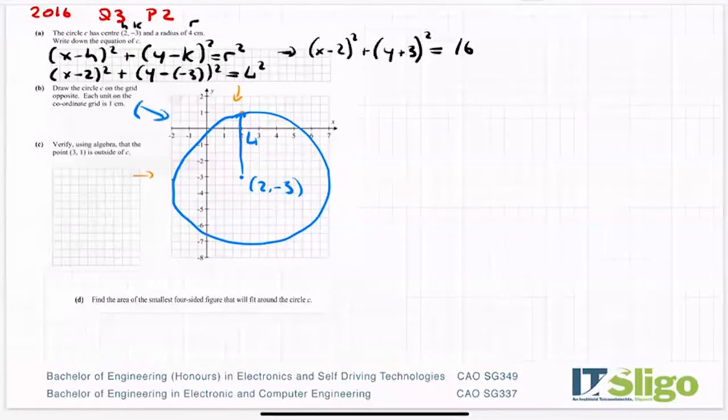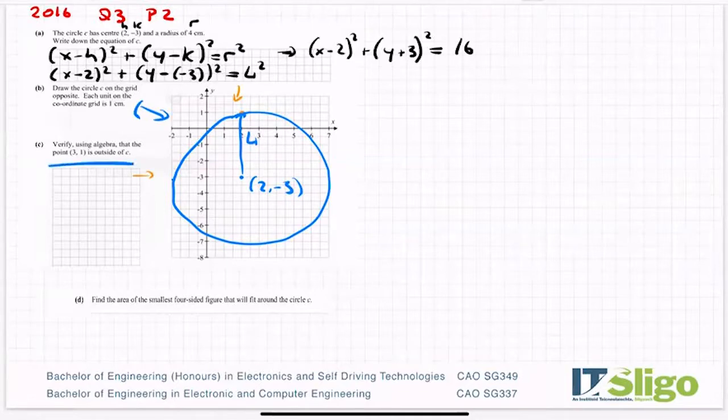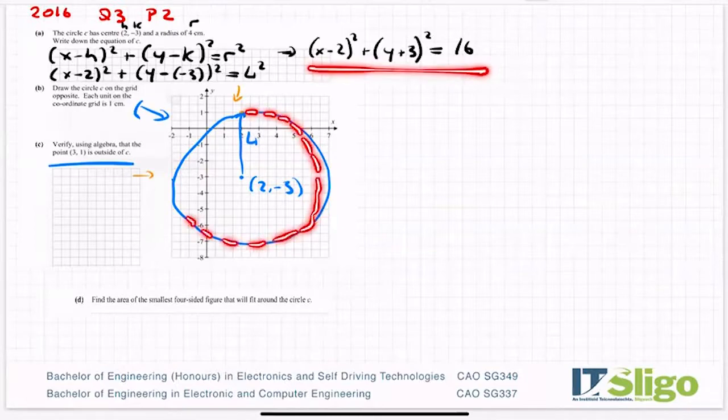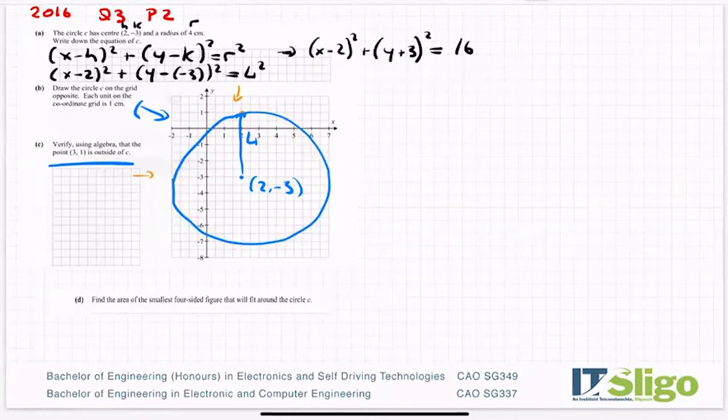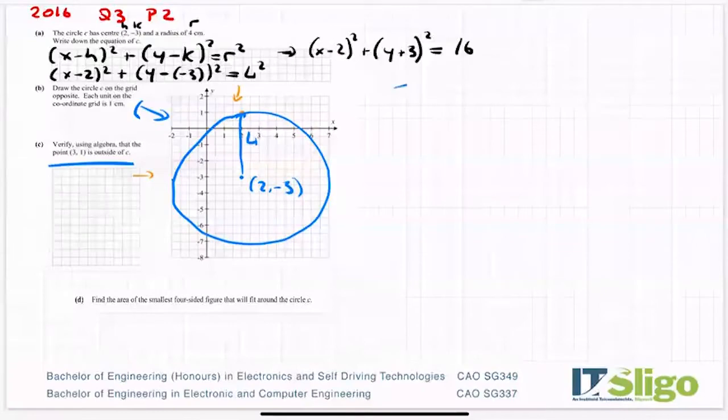Verify using algebra that the point (3, 1) is outside the circle. So how do you do that? Well, the equation of a circle is the formula that links all the points on the outside of a circle together. So in other words, if we sub in any point, and it's on the outside of that circle, we should get the left hand side equal to the right. So just to show the formula in action.